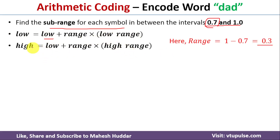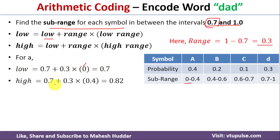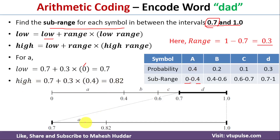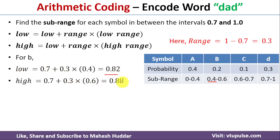For symbol A: low = 0.7 + 0.3 × 0 = 0.7, and high = 0.7 + 0.3 × 0.4 = 0.82. For symbol B: low = 0.7 + 0.3 × 0.4 = 0.82, and high = 0.88.